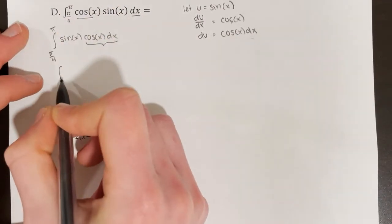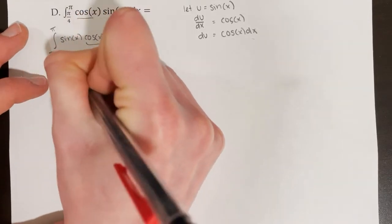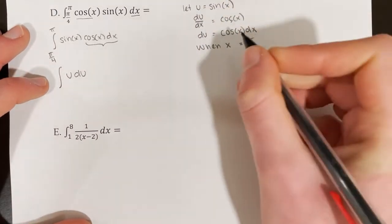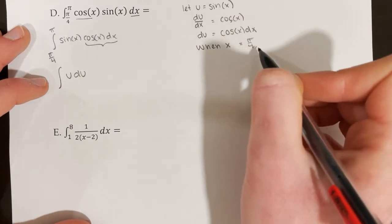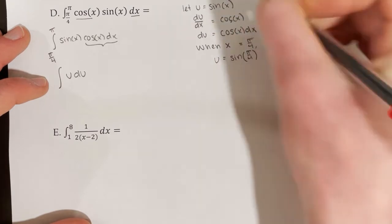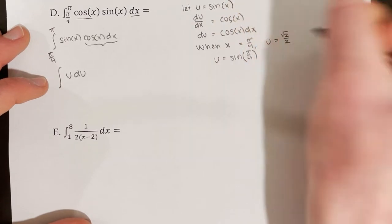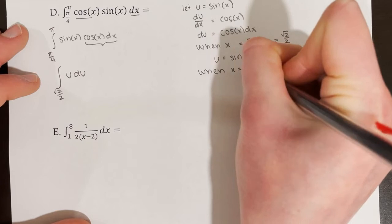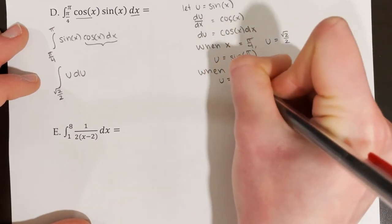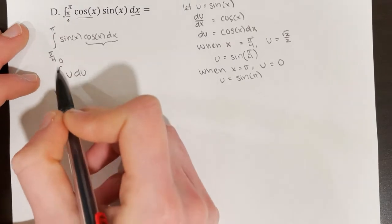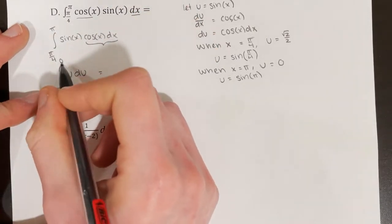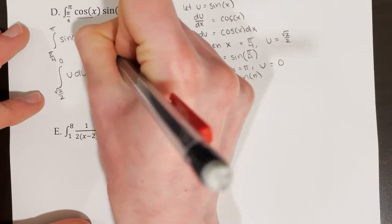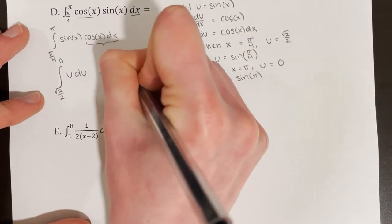Now we swap: u for sine of x, and cosine of x dx becomes du, giving us u du. We leave the bounds blank while transitioning to u. When x equals pi over 4, our lower bound, u equals sine of pi over 4, which is root 2 over 2 — our new lower bound. When x equals pi, u equals sine of pi, which is 0. I don't like this because the smaller number is on top, so I swap it around: the integral from 0 to root 2 over 2, with a negative out front of u du.